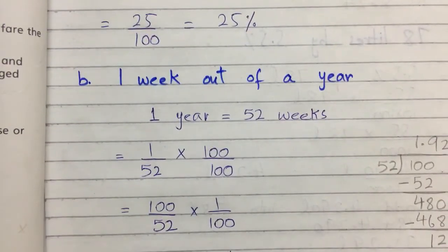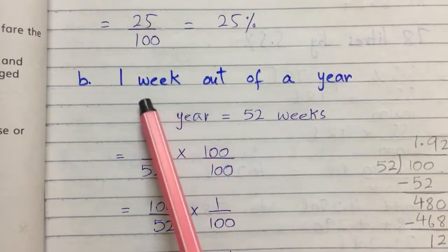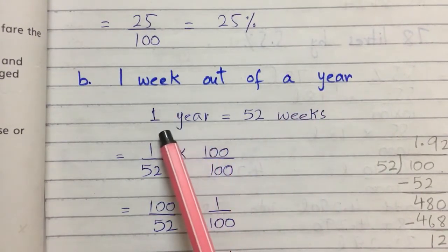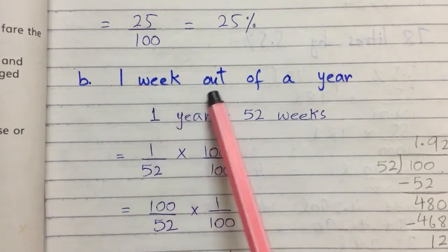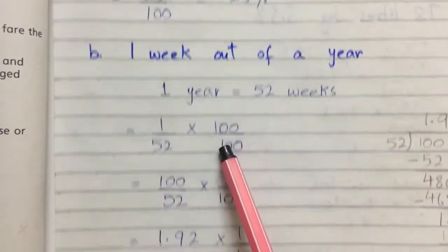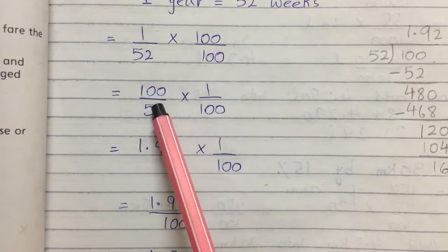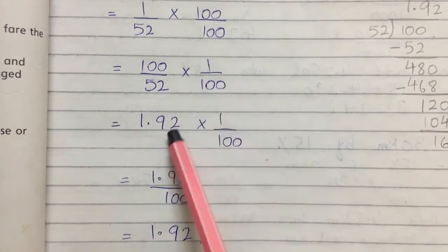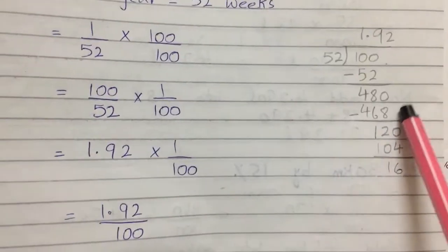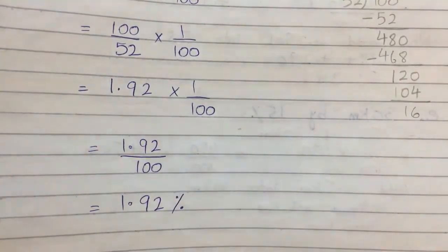Part b is: one week out of a year. First, make sure both quantities are in the same units — this is weeks and this is years. We convert one year into weeks: 1 year equals 52 weeks. So, 1 divided by 52, multiplied by 100 percent, gives 1.92 divided by 100, which equals 1.92 percent. So one week out of a year is 1.92 percent.